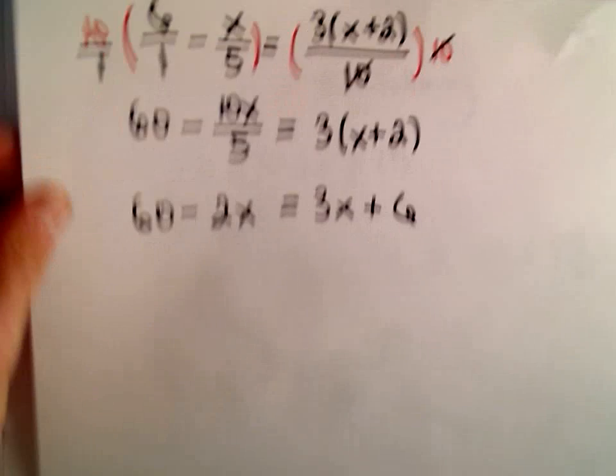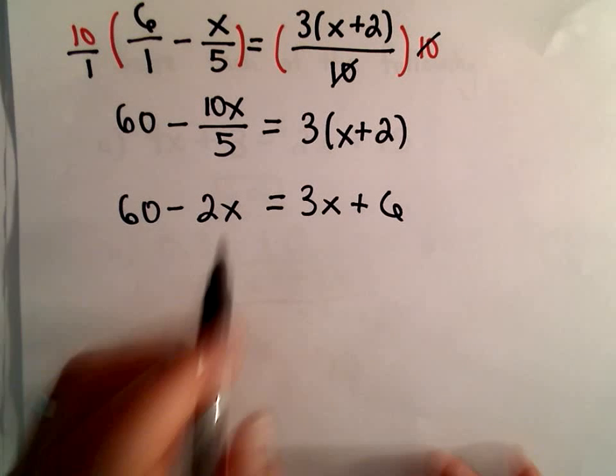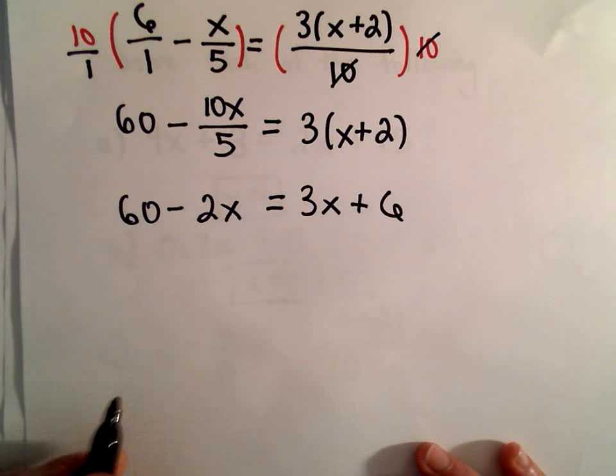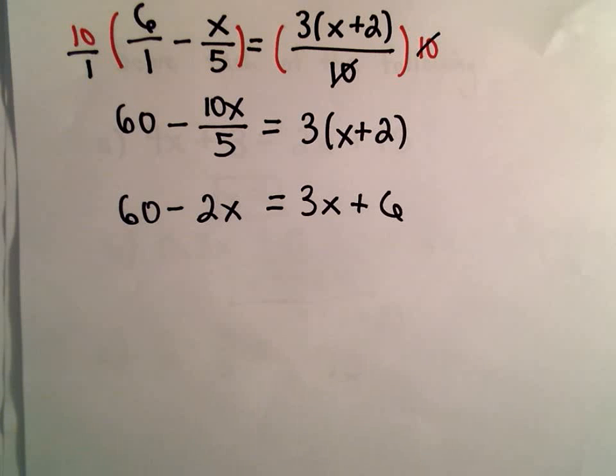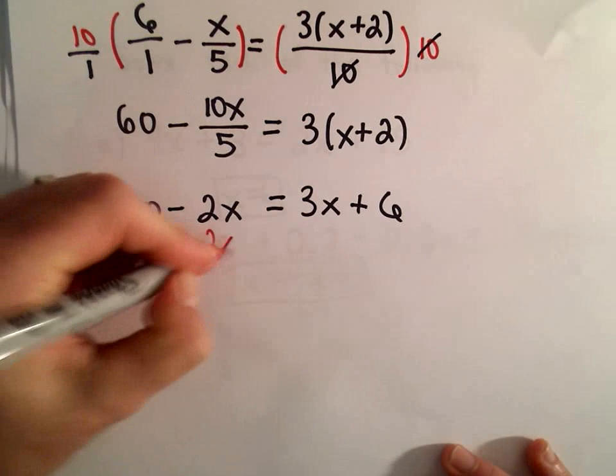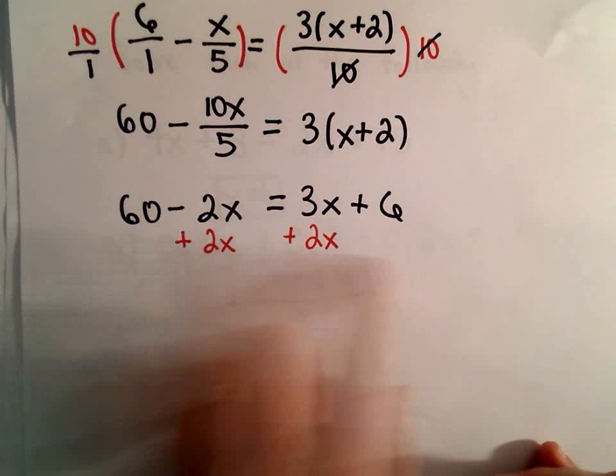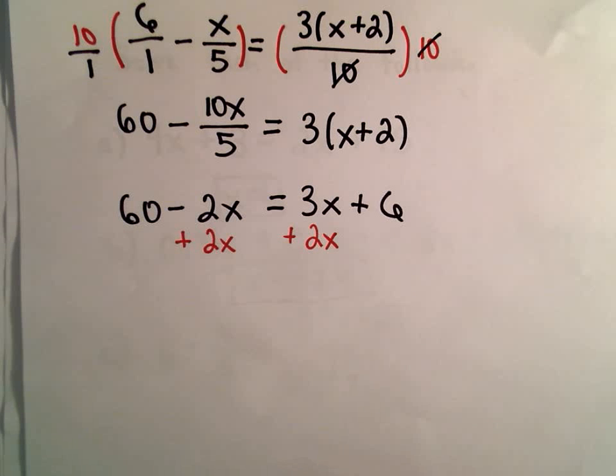And now, it's a matter of putting all the terms involving x on one side and all the constants on the other. So, the first thing I'm going to do to both sides is add 2x. You could move the constants around first as well. It doesn't matter.